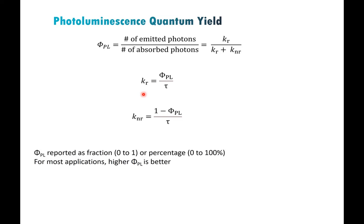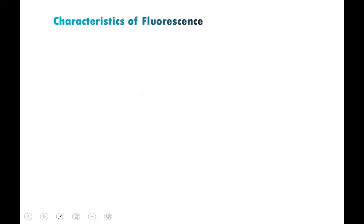The photoluminescence quantum yield is usually reported as a fraction between 0 and 1, or as a percentage from 0 to 100%. For most applications of photoluminescence, you want the quantum yield to be as high as possible — that's a research challenge we're all familiar with.